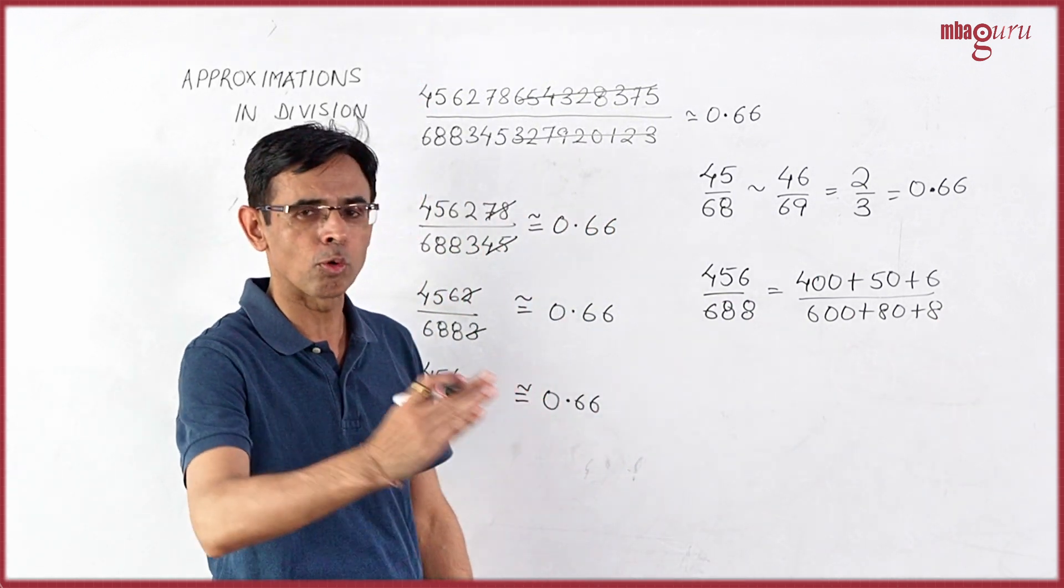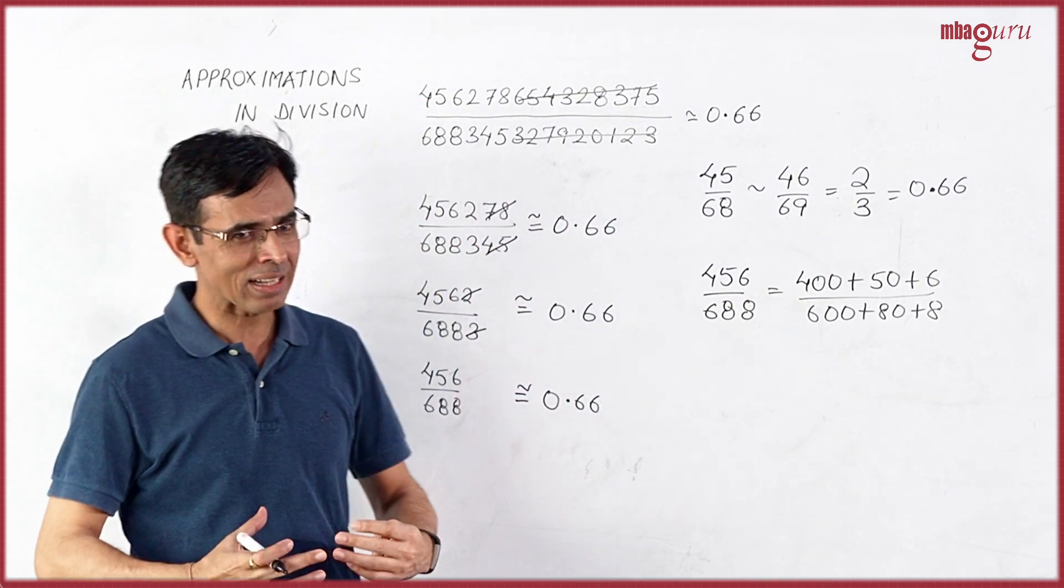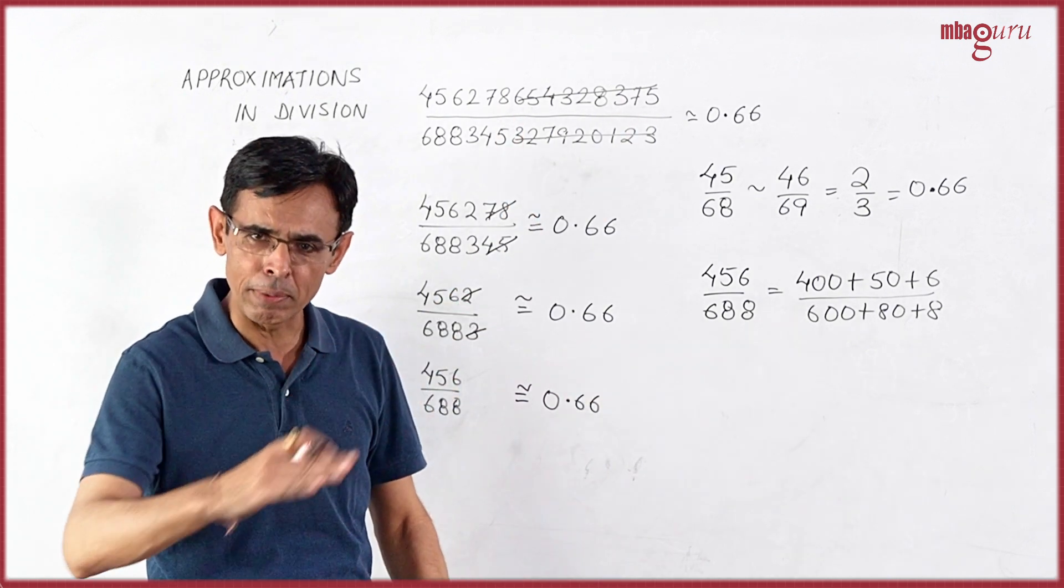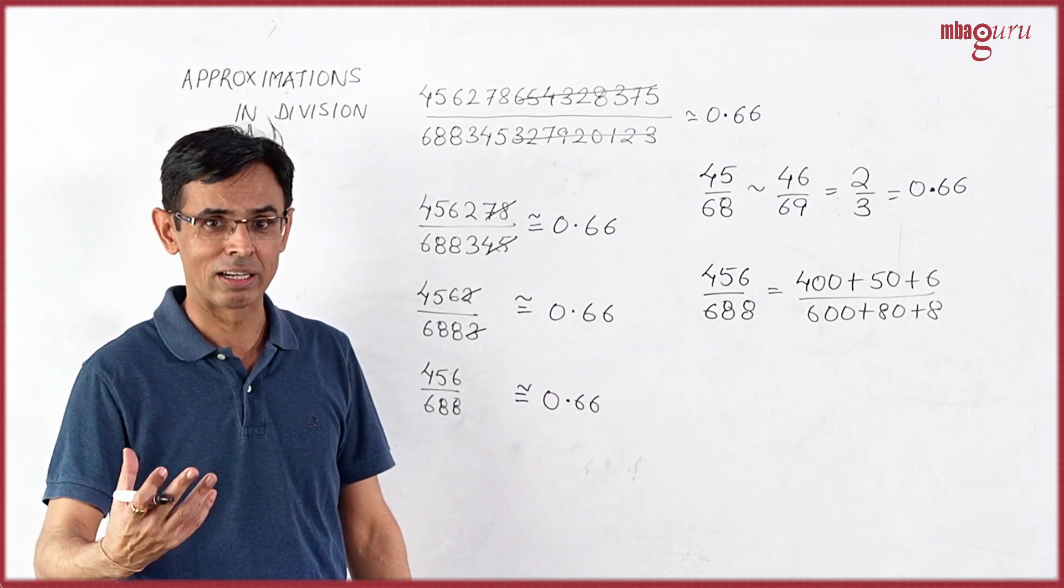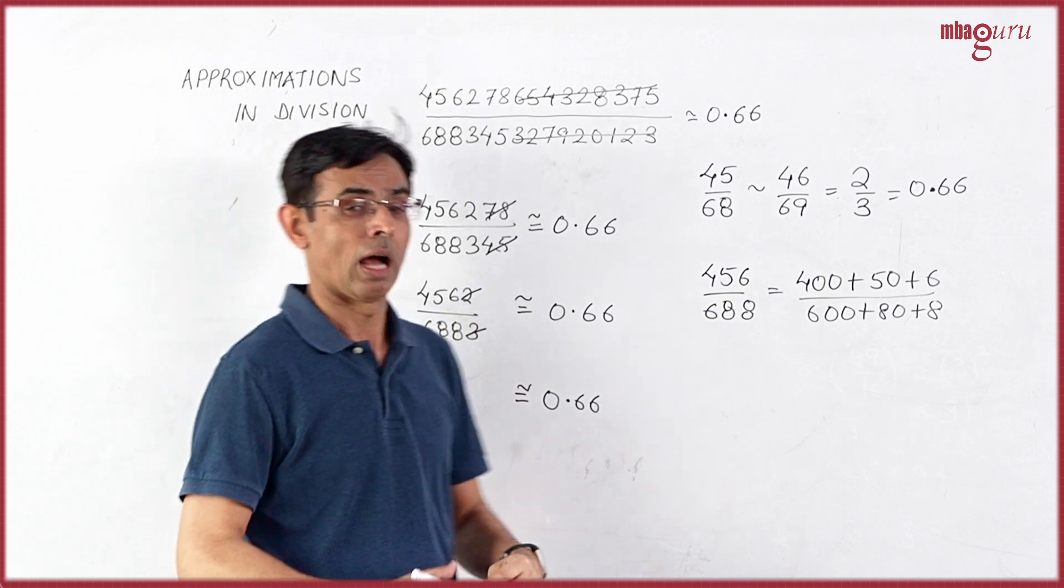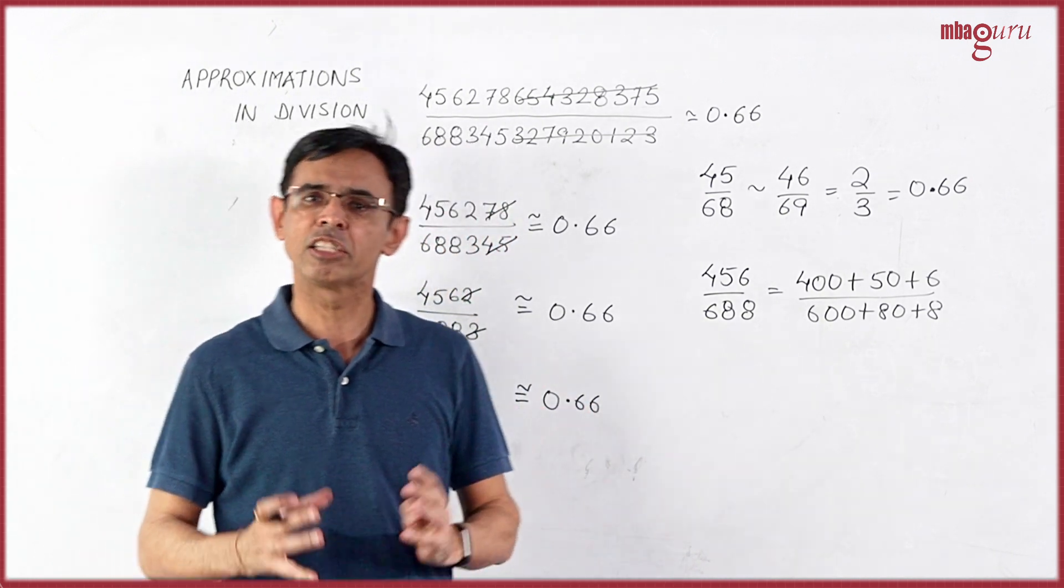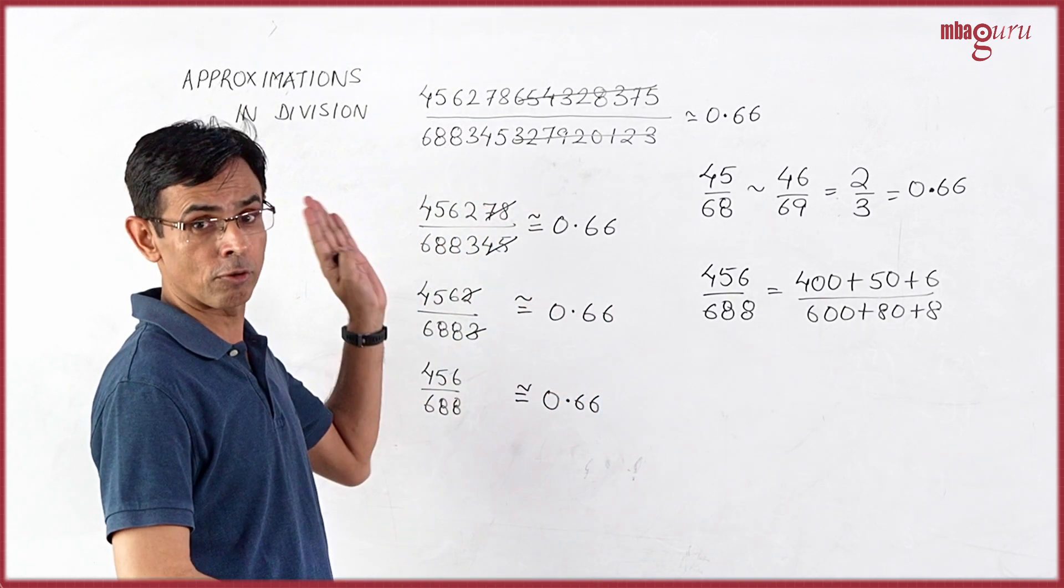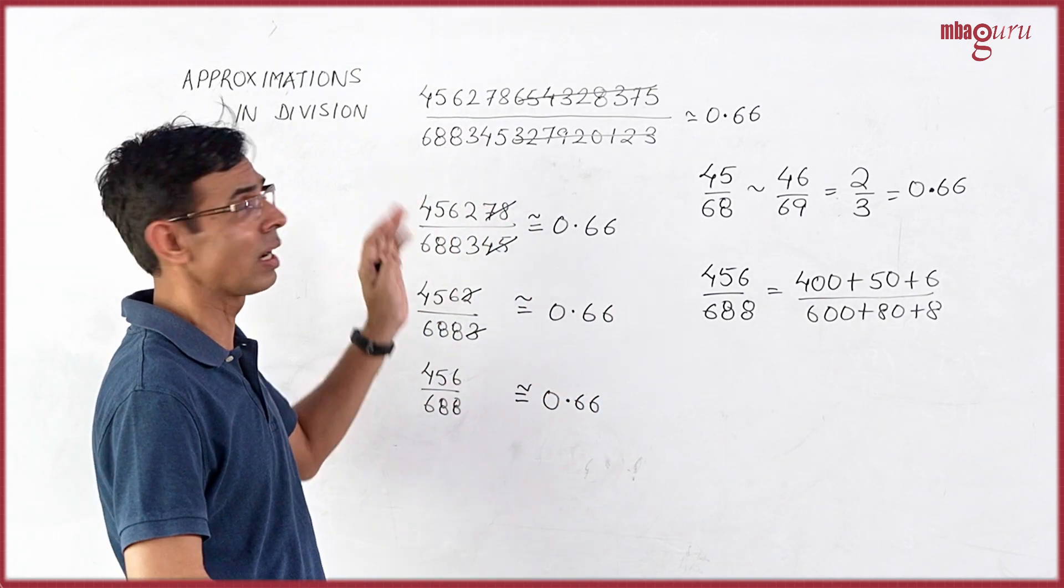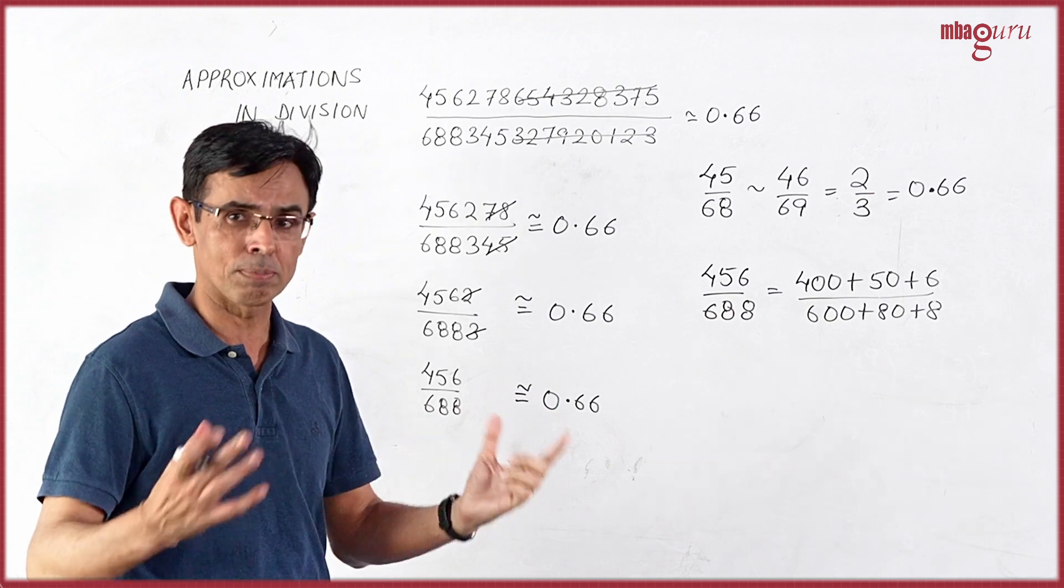So, as you move towards the right, the impact that these numbers are making diminishes by a power of 10. So it's important. Again, the bigger picture is more important. The most significant digits in division lie to the leftmost side because they are the ones being multiplied with the highest powers of 10.